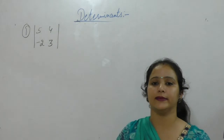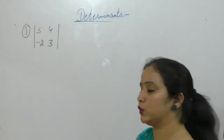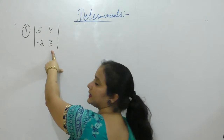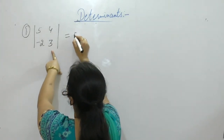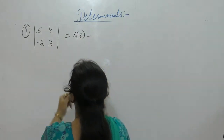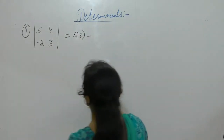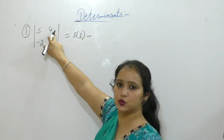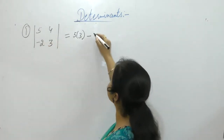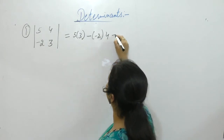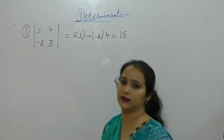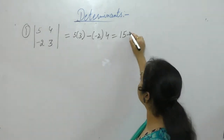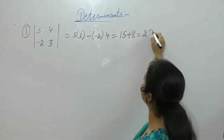We have learned determinants for a matrix of order 2. How to solve it? Multiply the diagonal elements: 5 into 3 is 15. Negative sign in the middle, minus multiplication of the other two elements: minus (-2) into 4. So 15 minus minus is plus, 2 into 4 is 8. That is 23.